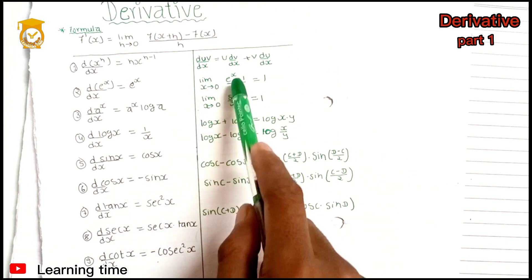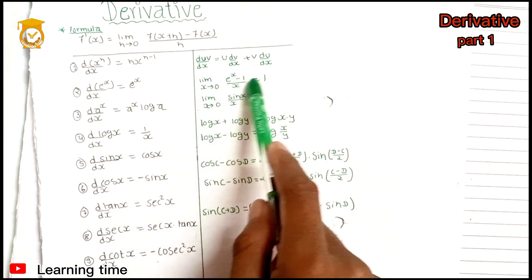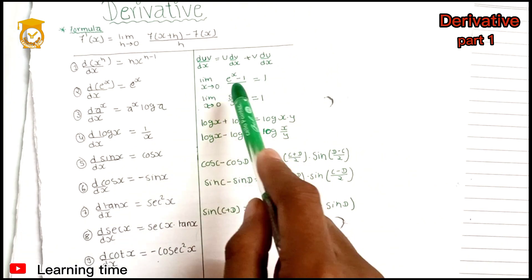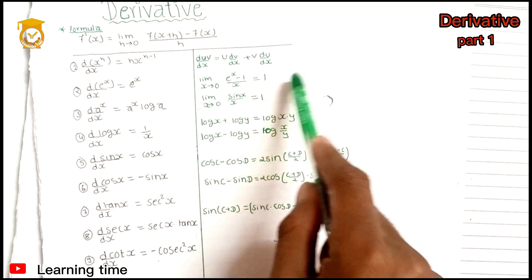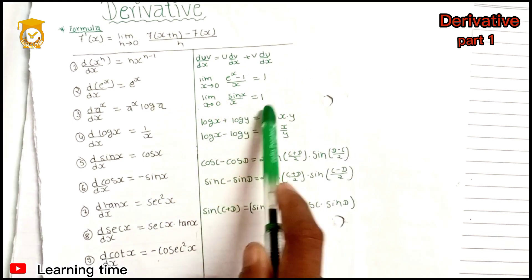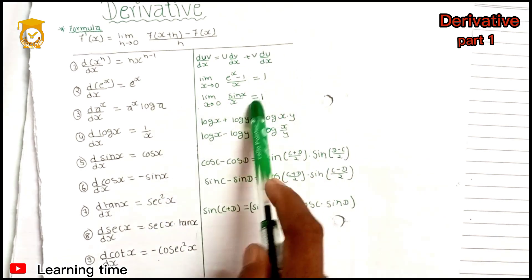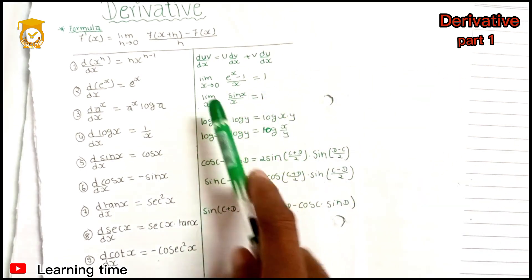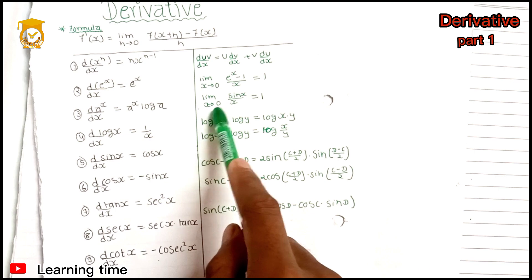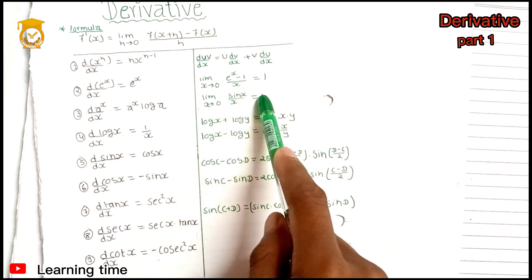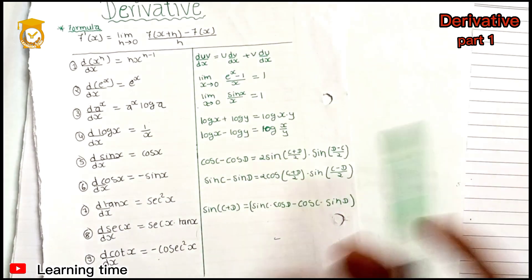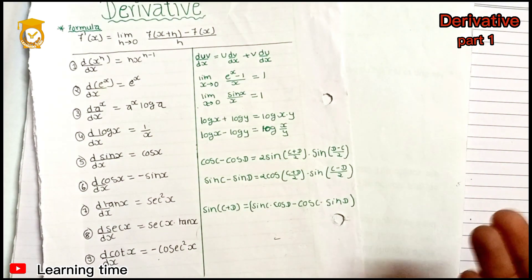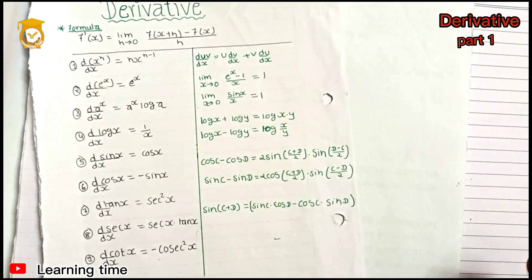Limit of (e to the power x minus 1) divided by x as x approaches 0 is equal to 1. And limit x to 0 of sin x by x is equal to 1. So now we use the log property.